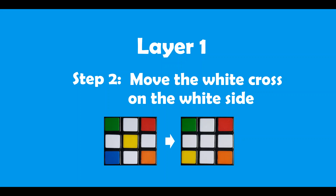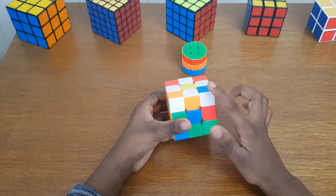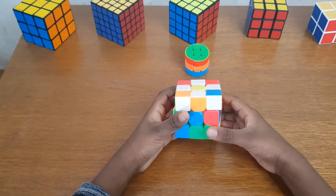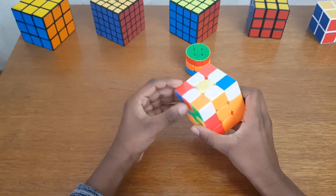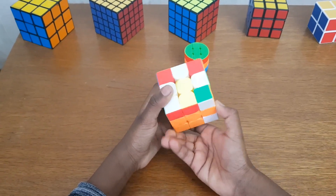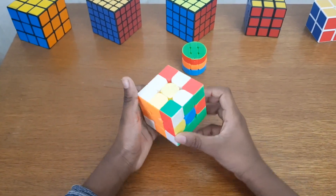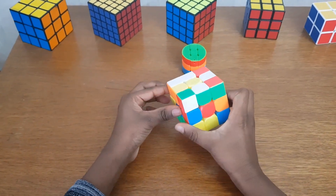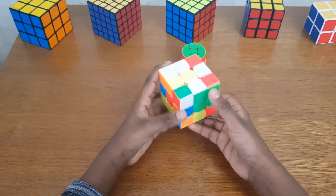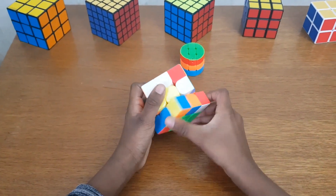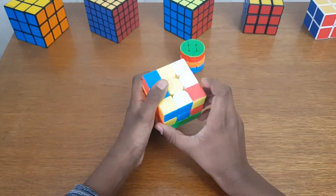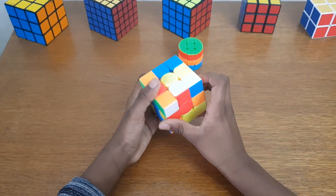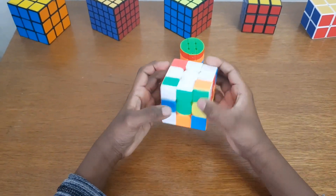The second step is to move the white cross from the yellow side to the white side as shown in the image. The condition here is to match the connected white piece with the center piece. Rotate the top until it matches. Once it matches, rotate the matching side two times. Repeat this for all the remaining white pieces.